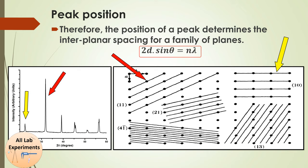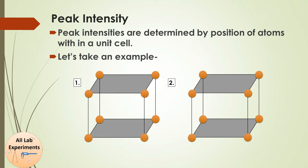Now let us talk about peak intensity. The intensity of a particular peak depends upon the position of atoms within a lattice. Take two cubic primitive cells — in one, an atom is added on the upper and lower face; in the other, one atom is added at the body center. In both cases one atom is added. In the left case there are only two planes; the path difference between ray 1 and ray 2 is λ, giving constructive interference.